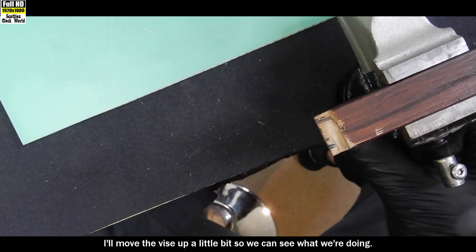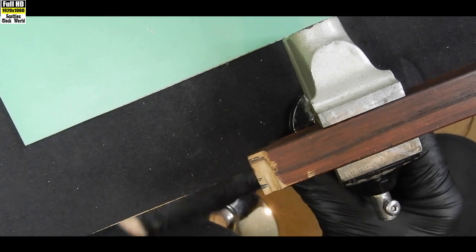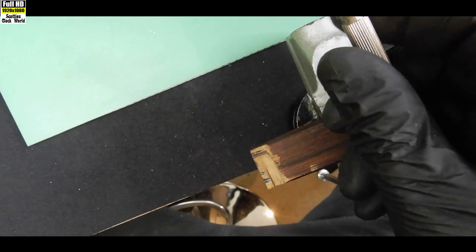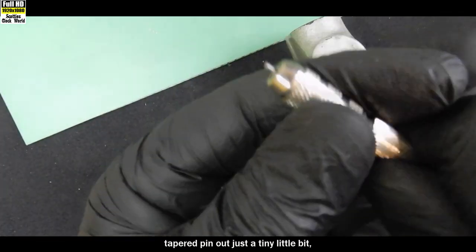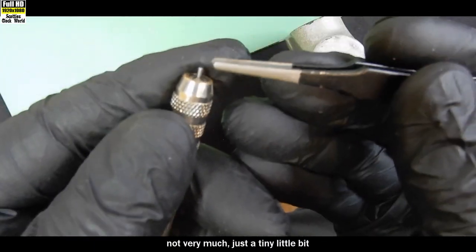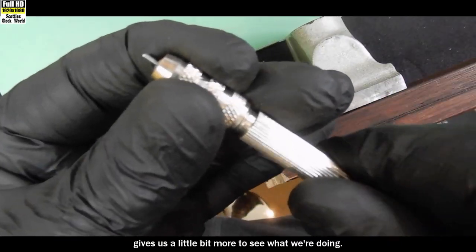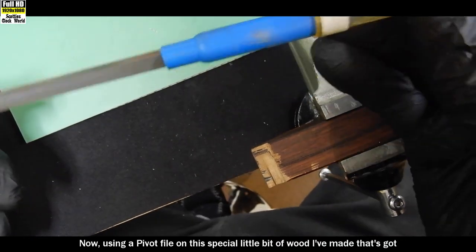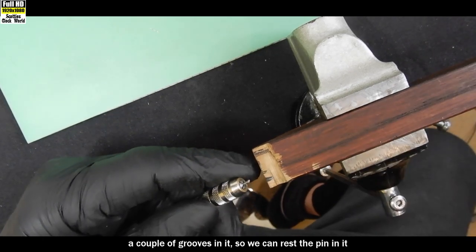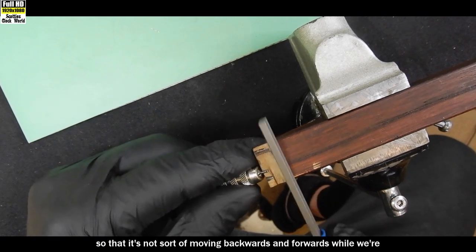I'll move the vise up a little bit so we can see what we're doing. I'll pull the tapered pin out just a tiny little bit with a pair of tweezers. That'll be enough. Give us a little bit more to see what we're doing. Now, using a pivot file on this special little bit of wood I've made that's got a couple of grooves in it, we can rest the pin in it so that it's not moving backwards and forwards while we're filing it.